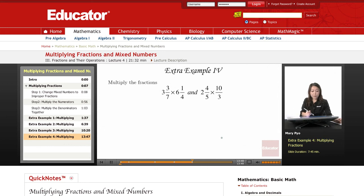The last couple of examples. We have 3 and 3 over 7 times 6 and 1 fourth. These are both mixed numbers. Remember when we multiply fractions, we have to make sure that the fractions are not mixed numbers. We have to change these mixed numbers to make it an improper fraction.